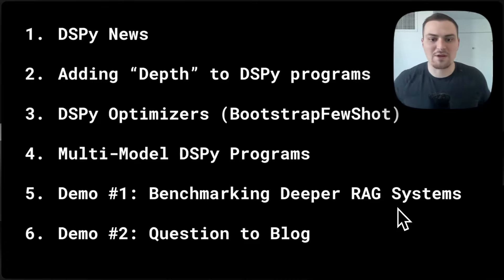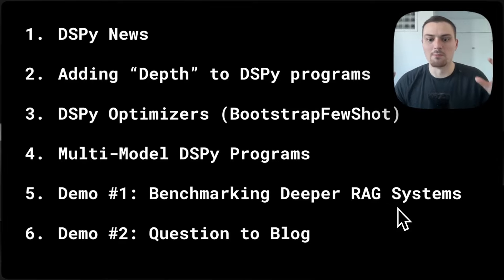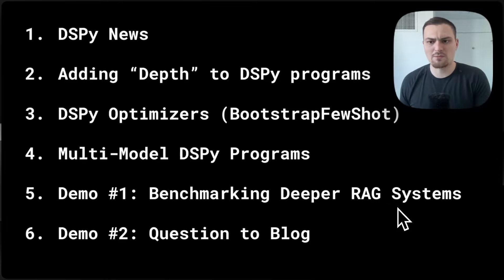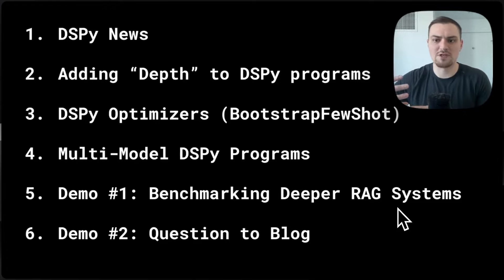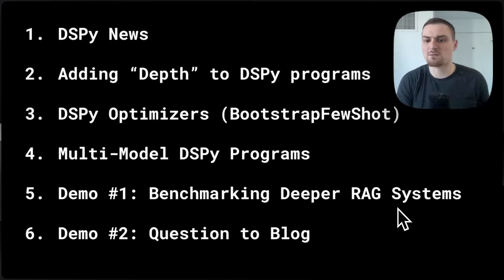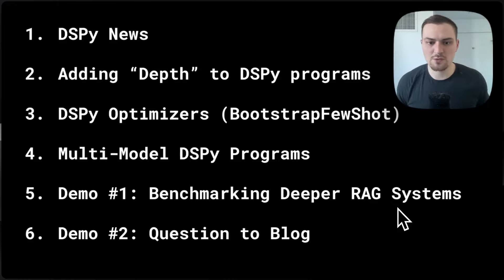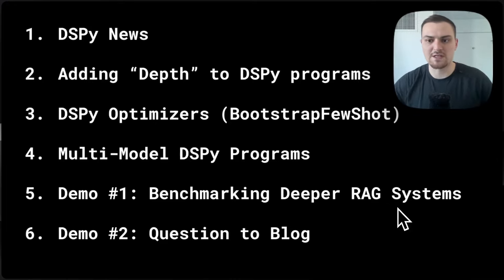Then we'll dive into a concept I think is super exciting: multi-model DSPy programs. Certain subtasks in your tasks require the reasoning capability of GPT-4, whereas others only require smaller, cheaper, faster models like Mistral 7B or Llama 2. We'll look at what it means to compose multi-model DSPy programs as well as some coding examples.